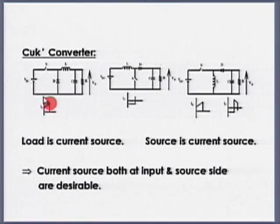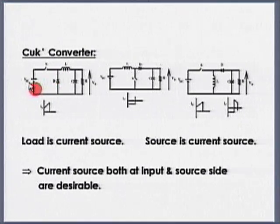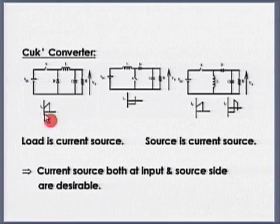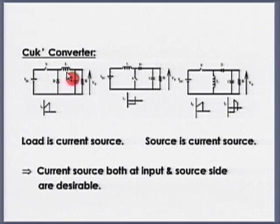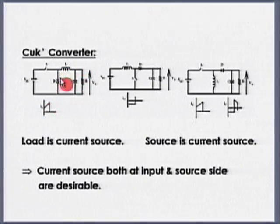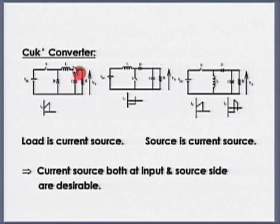In the buck converter, the moment I close the switch, whatever the current was flowing through the inductor starts flowing through the switch as well as the source. If I assume the inductor current to be continuous, the source current will jump almost instantaneously from 0 to the current that was flowing through the inductor at t equals 0 minus. So dI/dt at this point is very high. At the output stage, I have an inductor, so I can represent it as a current source.